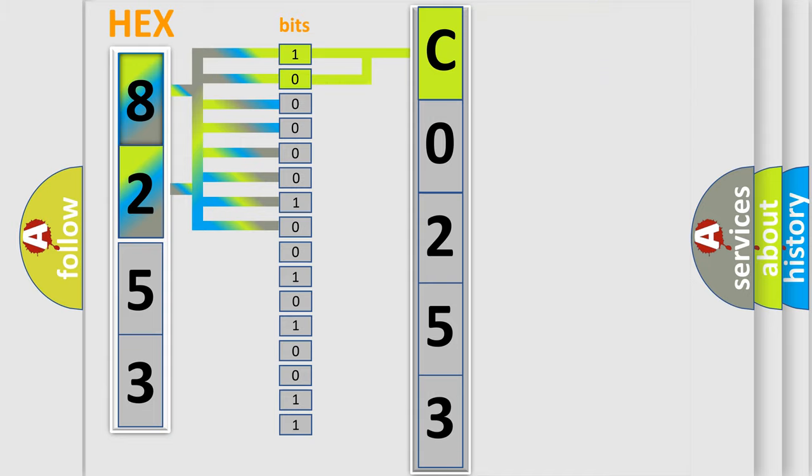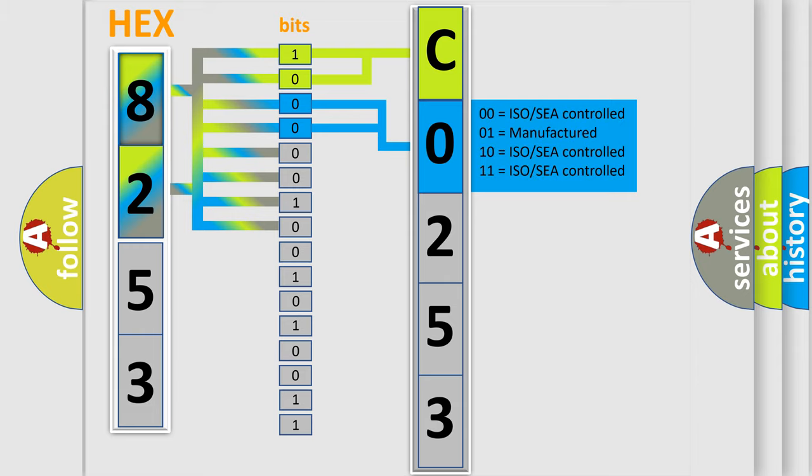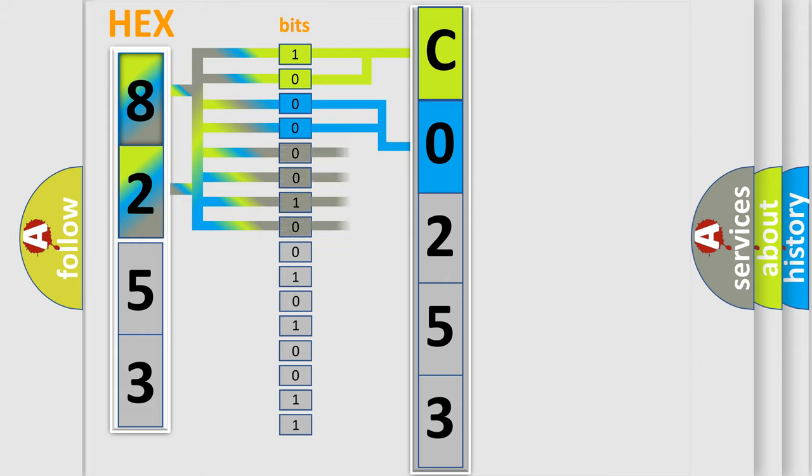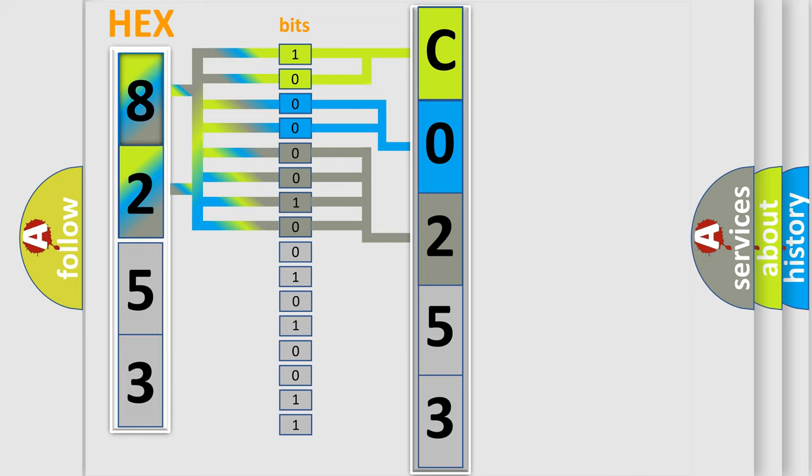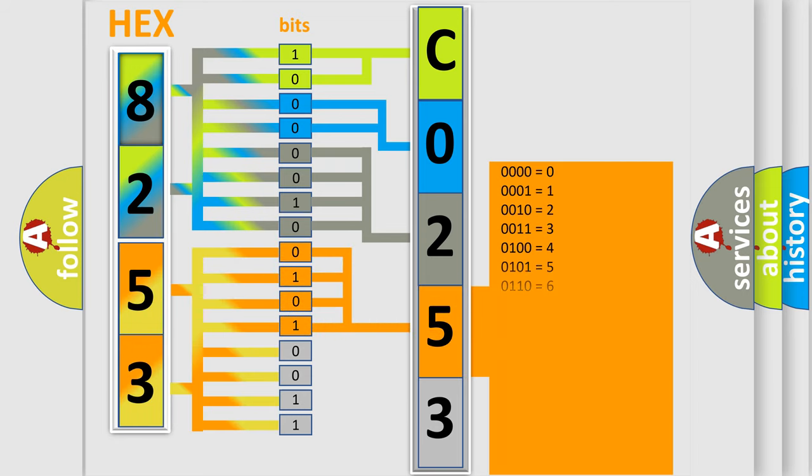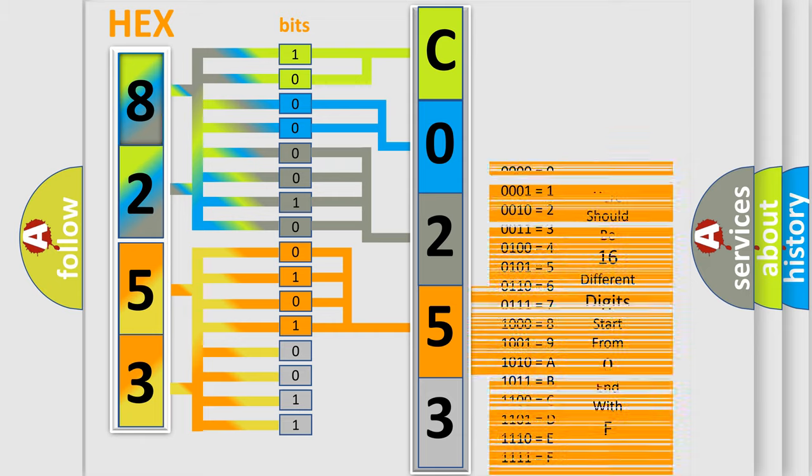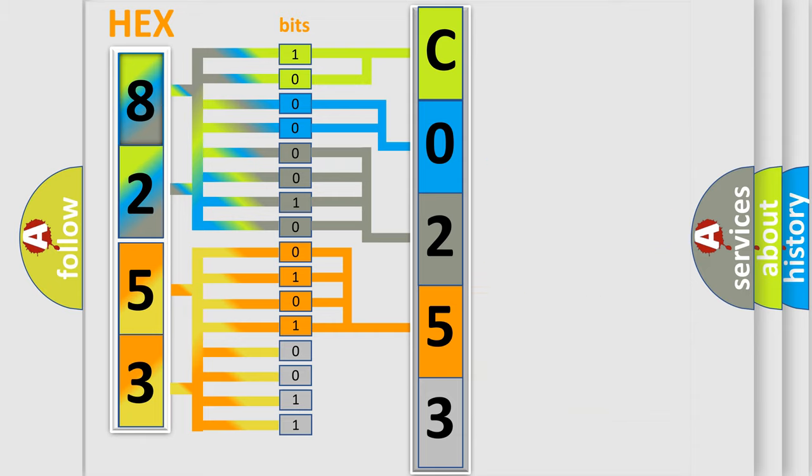The next two bits determine the second character. The last bit styles of the first byte define the third character of the code. The second byte is composed of a combination of eight bits. The first four bits determine the fourth character of the code, and the combination of the last four bits defines the fifth character.